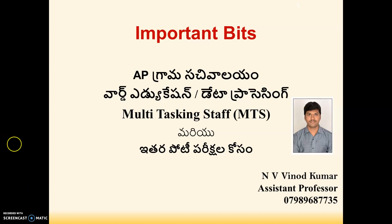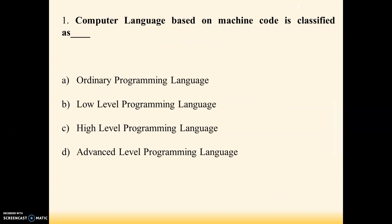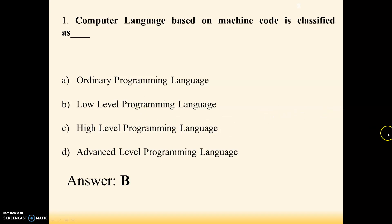First question: computer language based on machine code is classified as — option A: ordinary programming language, option B: low level programming language, option C: high level programming language, option D: advanced level programming language. Answer is B — computer language based on machine code is classified as low level programming language.